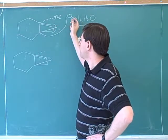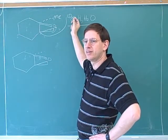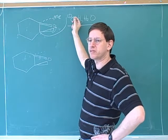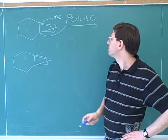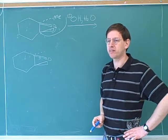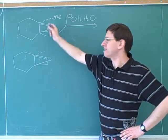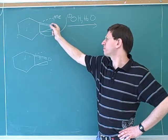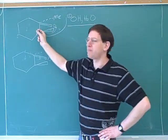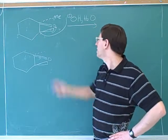Is this hydroxide going to be attacking from in front or from behind? From the back. Why can't it attack from in front? Because of sterics — this group here is blocking the front. So we would expect this to attack the bottom carbon and to attack from behind. Both of those for steric reasons.